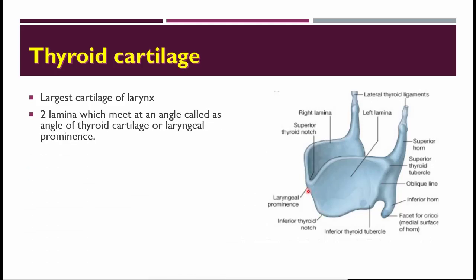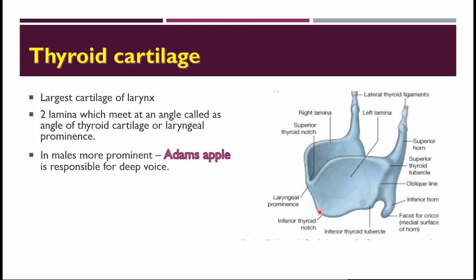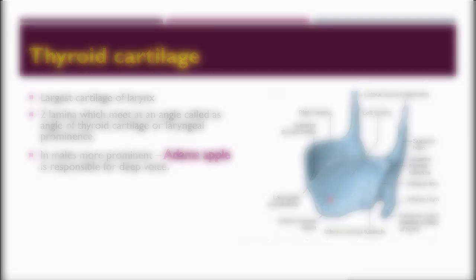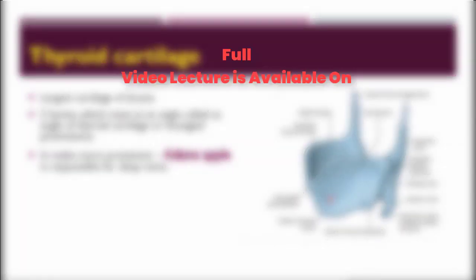Each thyroid cartilage has two laminae joined anteriorly at an angle called the angle of the thyroid cartilage, or the laryngeal prominence. This prominence is very prominent in adult males and is called the Adam's Apple. During puberty, there is a sudden spurt of growth in the larynx and the angle increases — it is about 90 degrees in males, forming a very deep angle responsible for the deep voice.